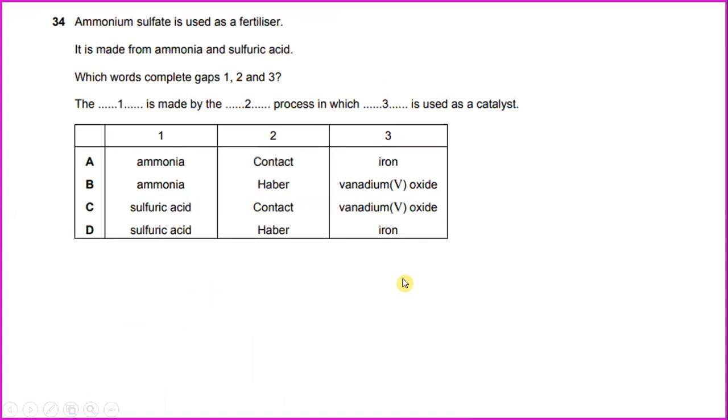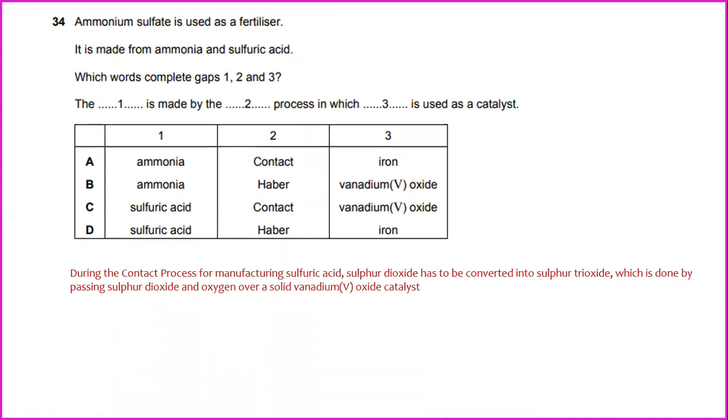Ammonium sulfate is used as a fertilizer and it is made from ammonia and sulfuric acid. Which words complete gap 1, 2, and 3 during the contact process for manufacturing sulfuric acid? Number one would be sulfuric acid. Sulfur dioxide has to be converted into sulfur trioxide. So the process will be the contact process, which is number two, the contact process in which vanadium V oxide is used as a catalyst, which is done by passing sulfur dioxide and oxygen over a solid vanadium V oxide catalyst. So the answer will be sulfuric acid, contact process, and vanadium oxide. So will be C.